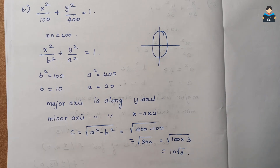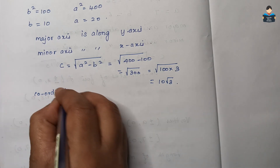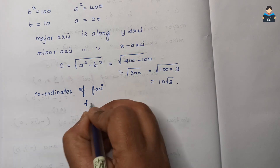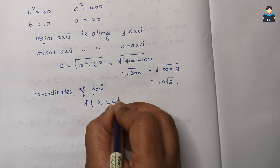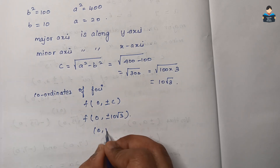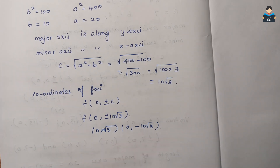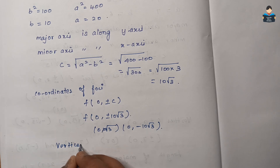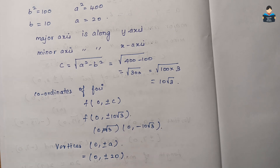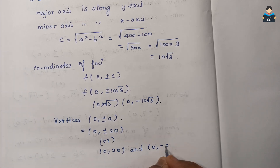Coordinates of foci = (0, ±c) = (0, ±10√3), so (0, 10√3) and (0, −10√3). Vertices = (0, ±a) = (0, ±20), so (0, 20) and (0, −20).